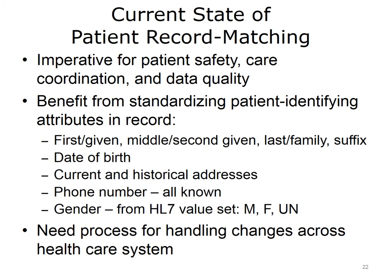A report from the Office of the National Coordinator for Health IT examined the current state of patient record matching, noting that accurate matching is imperative due to patient safety, care coordination, and data quality. The report noted that the current state-of-the-art record matching worked relatively well, but would benefit from standardizing patient-identifying attributes in electronic health records. For example, having standards for given, middle, and family names, standardizing suffixes, birth dates and times, using a standardized international format for current and historical addresses including phone numbers, and using standards to represent gender. The report also noted that there should be a process for handling changes when names, addresses, and other attributes change across the healthcare system.